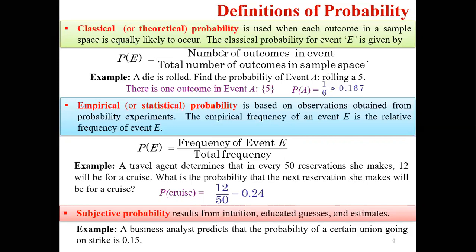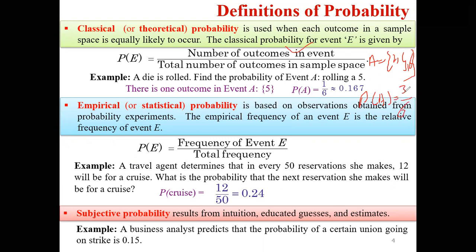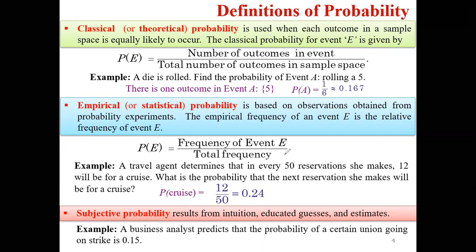So the sample space means total number of outcomes, and the number of outcomes in an event is what I am interested in — like I am interested in getting a five on a die. For even numbers on a die, the event is 2, 4, or 6. So the probability of an even number is 3 outcomes in the event divided by 6 total outcomes, which is 3/6 or 1/2. So the chance of an even number occurring is 50%.